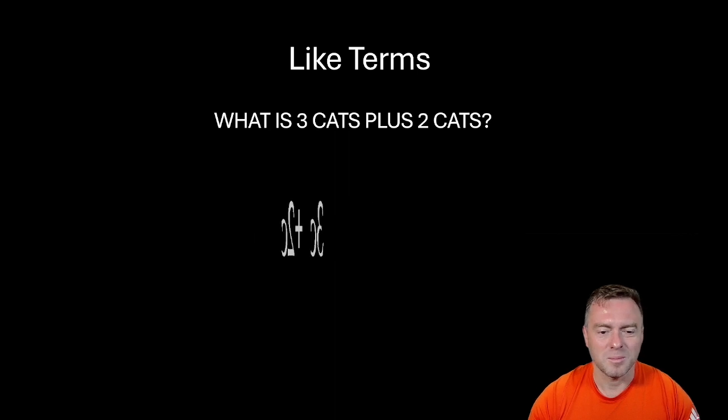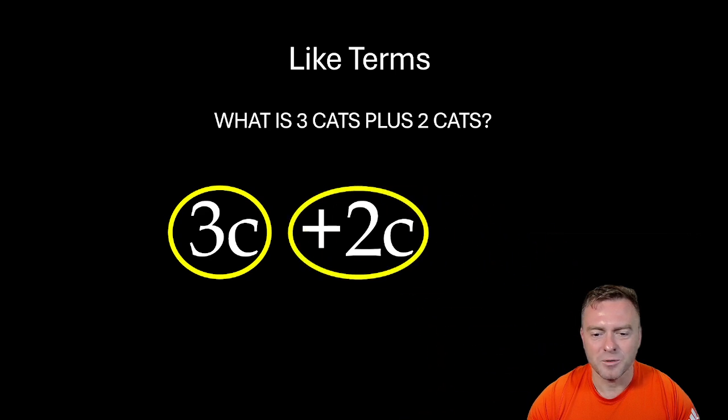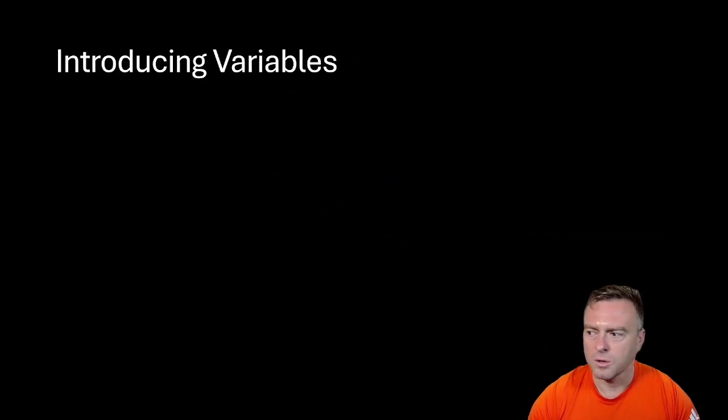So another example if we did that properly, well not properly but a little bit differently with the variables. So we could go 3c plus 2c and we would group them together and we would get 5c. Cool.